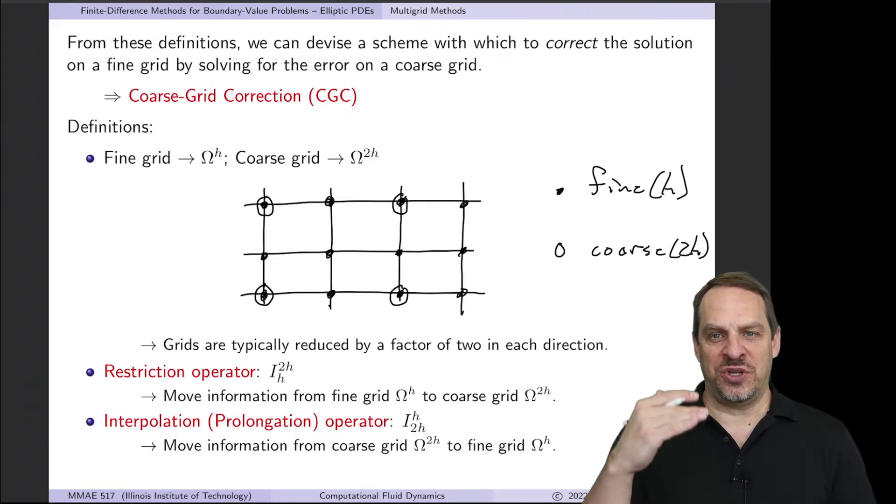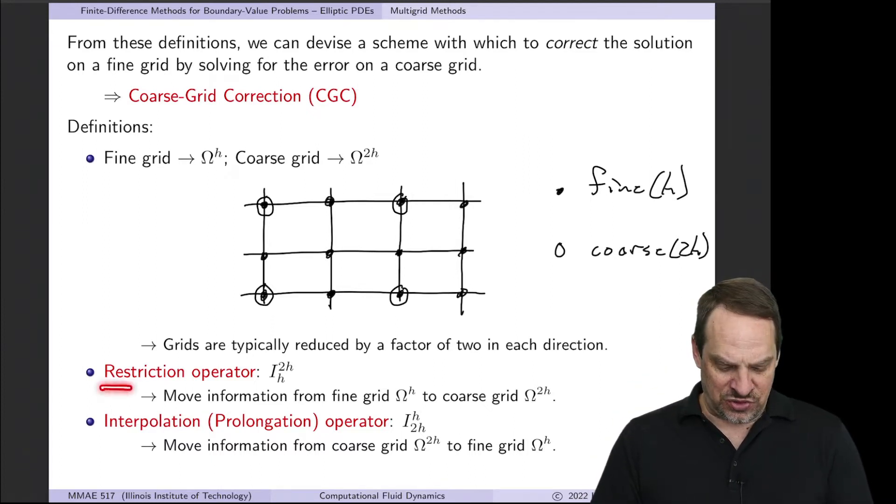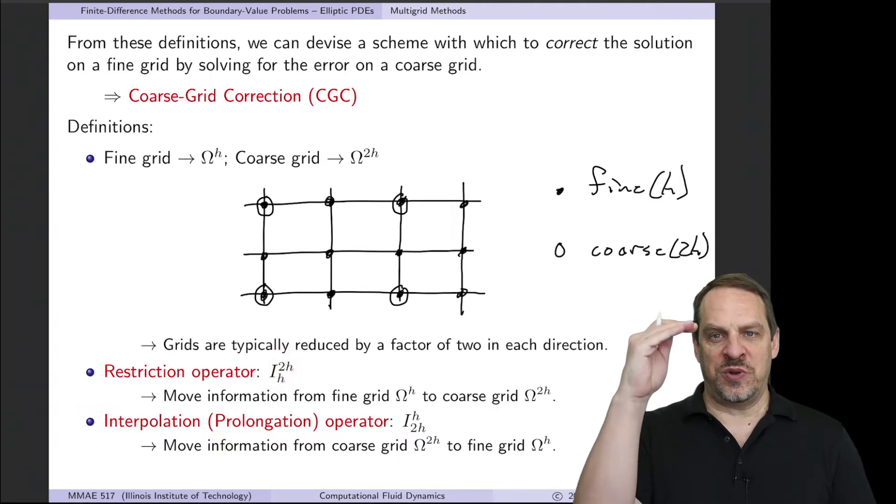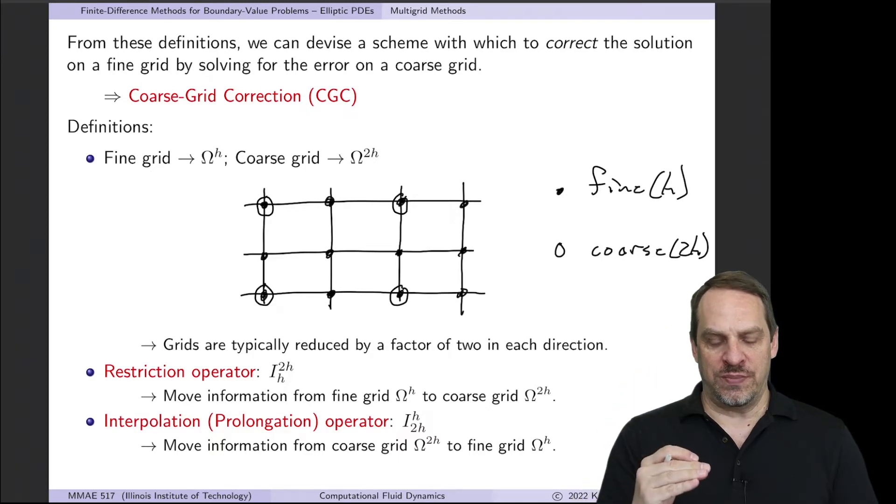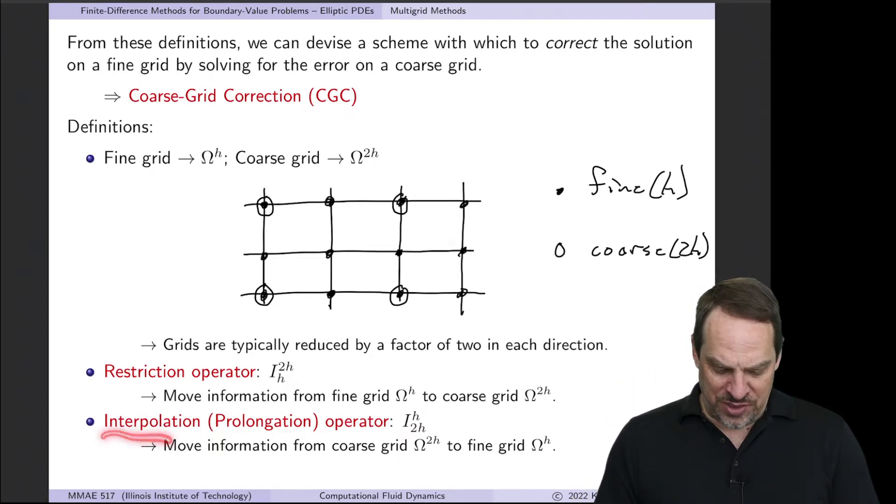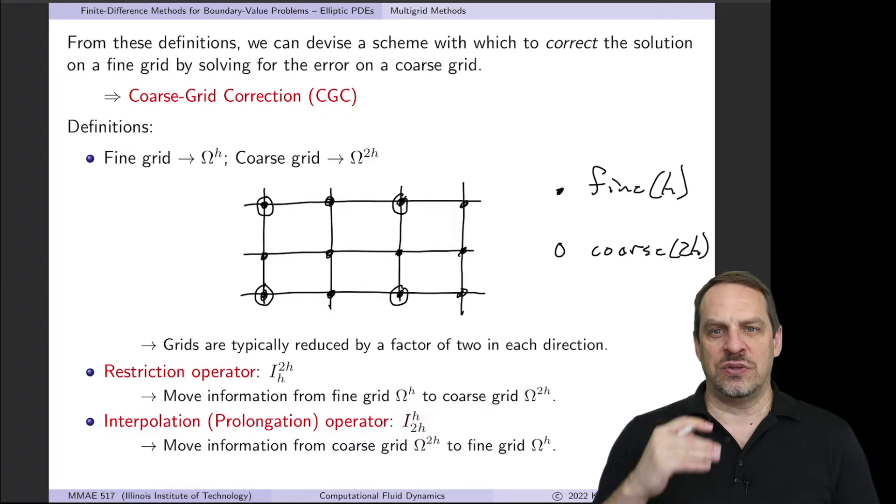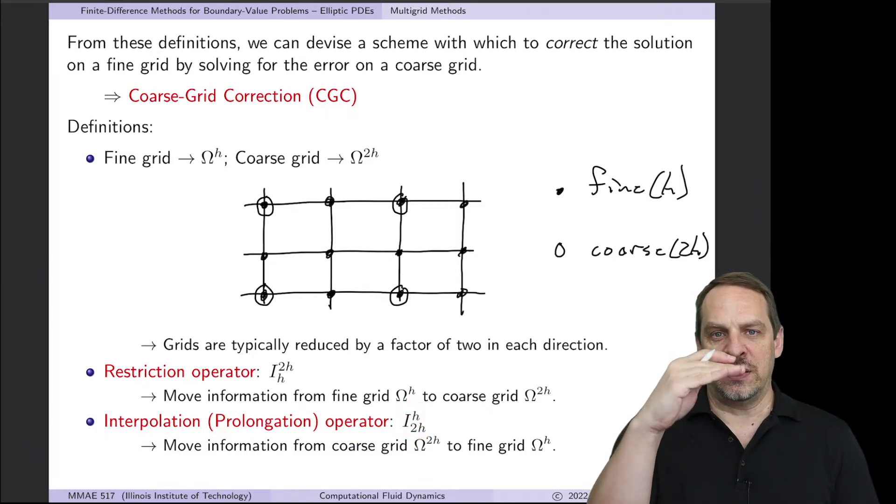We're going to need to be able to move information between these two grids. And the way we do that is using the restriction operator and the interpolation or the prolongation operator. The restriction operator takes us from the fine grid to the coarse grid. So it's going to move information from the fine to the coarse grid. The interpolation operator moves from the coarse grid to the fine grid. So from coarse back to fine.